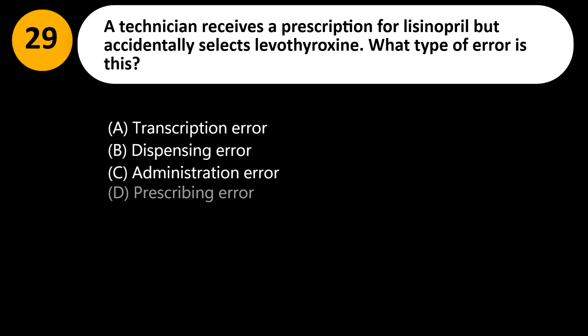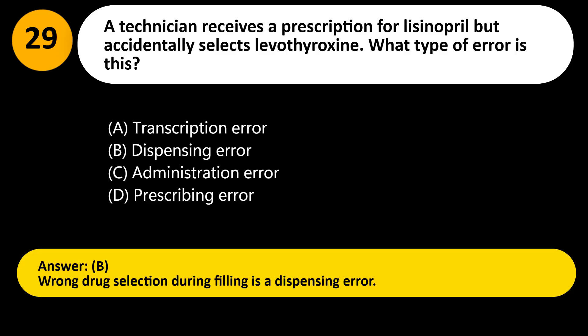A technician receives a prescription for lisinopril but accidentally selects levothyroxine. What type of error is this? A. Transcription error. B. Dispensing error. C. Administration error. D. Prescribing error. Answer: B. Wrong drug selection during filling is a dispensing error.